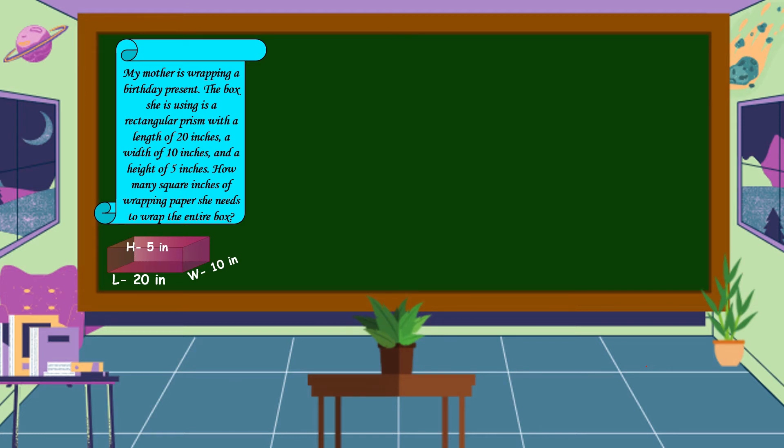Yes, you are right. The next step is we are going to solve the problem. So we are going to use the formula. SA is equal to 2LW plus 2LH plus 2WH. So let's substitute the value of our length, width, and height.